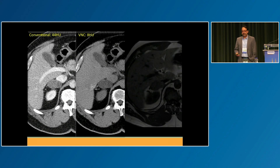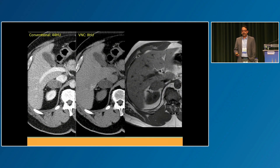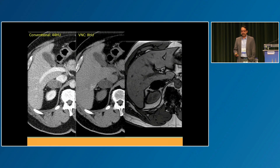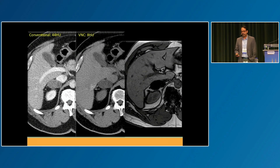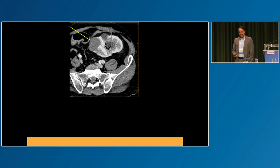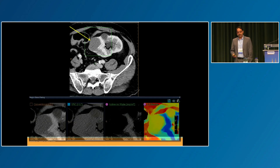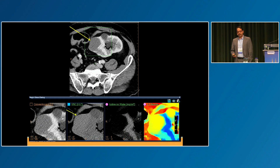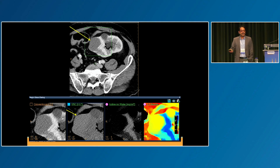I found an old MRI on this patient, and you can see complete signal drop-off on the out-of-phase images, which is consistent with benign adenoma. This is an indeterminate lesion in a transplant kidney. It's hyperdense on the virtual non-contrast with no iodine uptake — this is a hemorrhagic cyst. You resolve this in seconds.